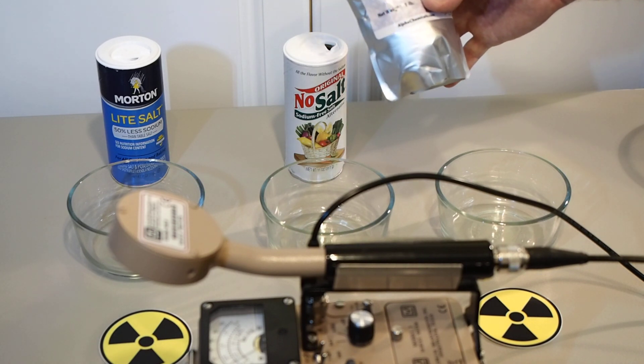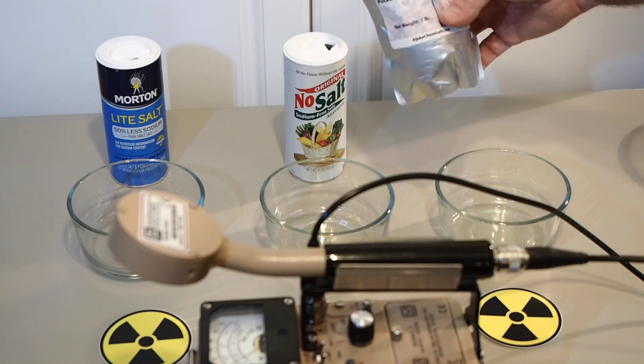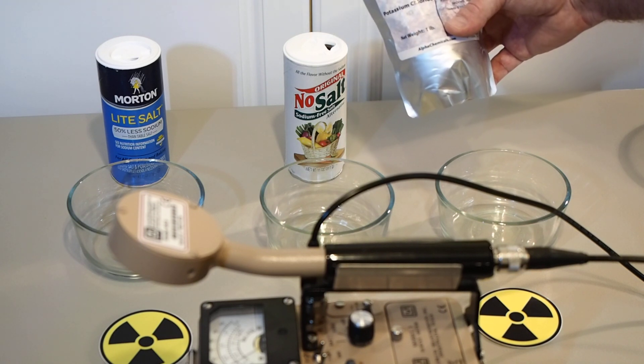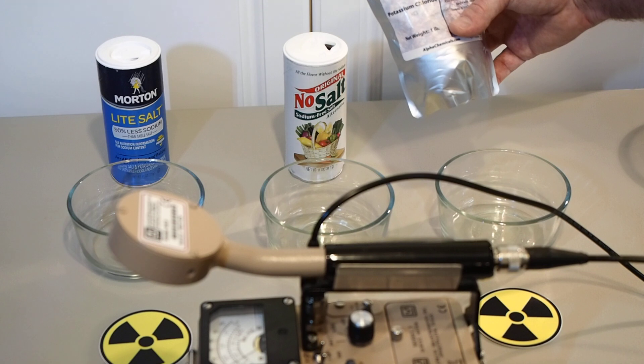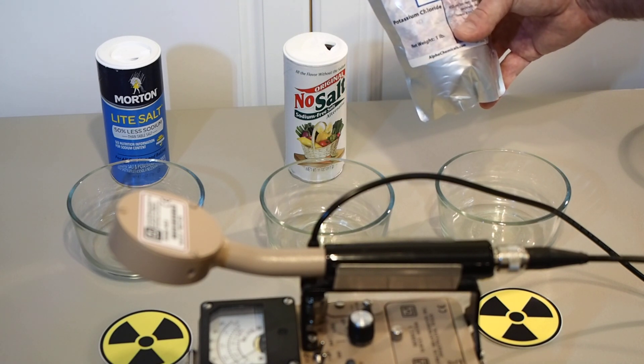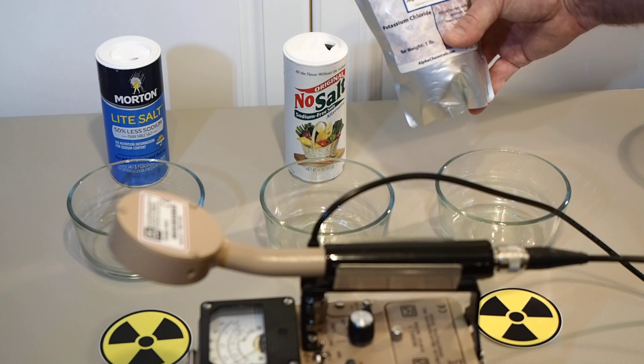This is 99% pure potassium chloride, used as a water softener for industrial use. Medical uses include treating low potassium levels in blood. One of the darker sides of potassium chloride is the third ingredient used in lethal injections.